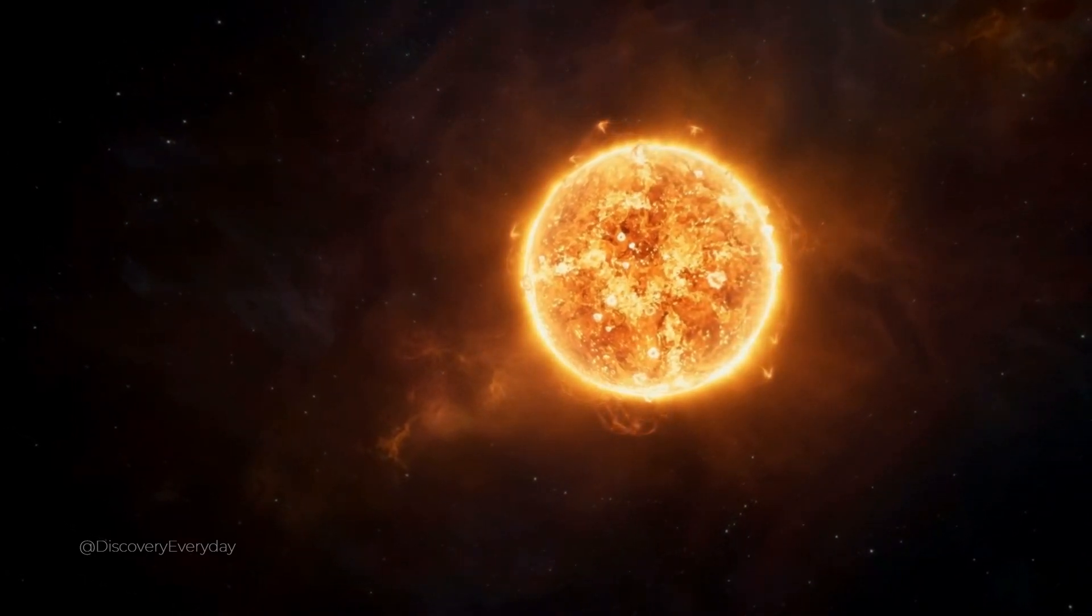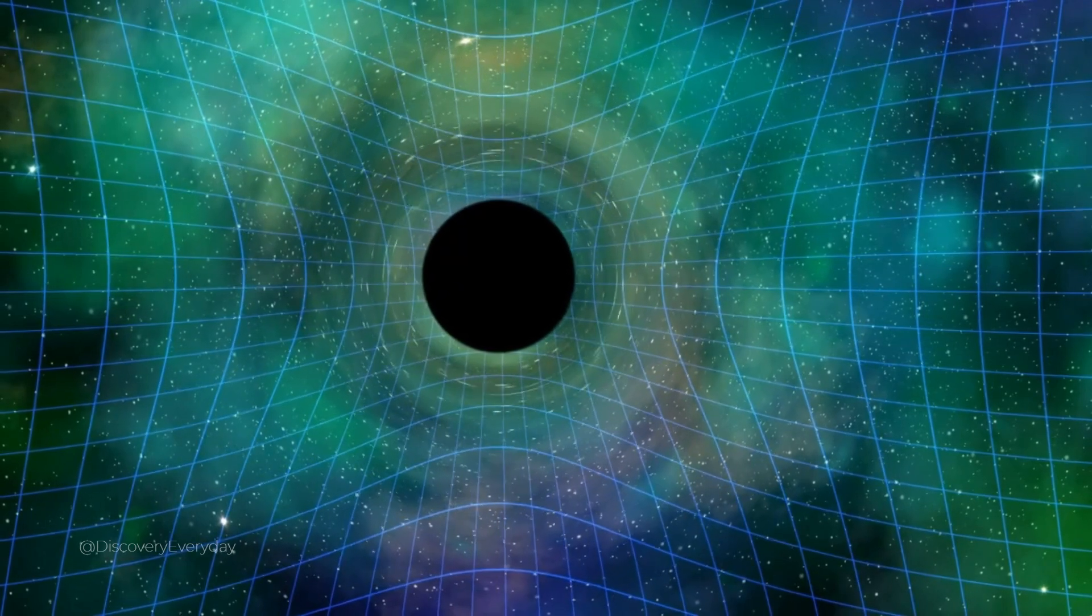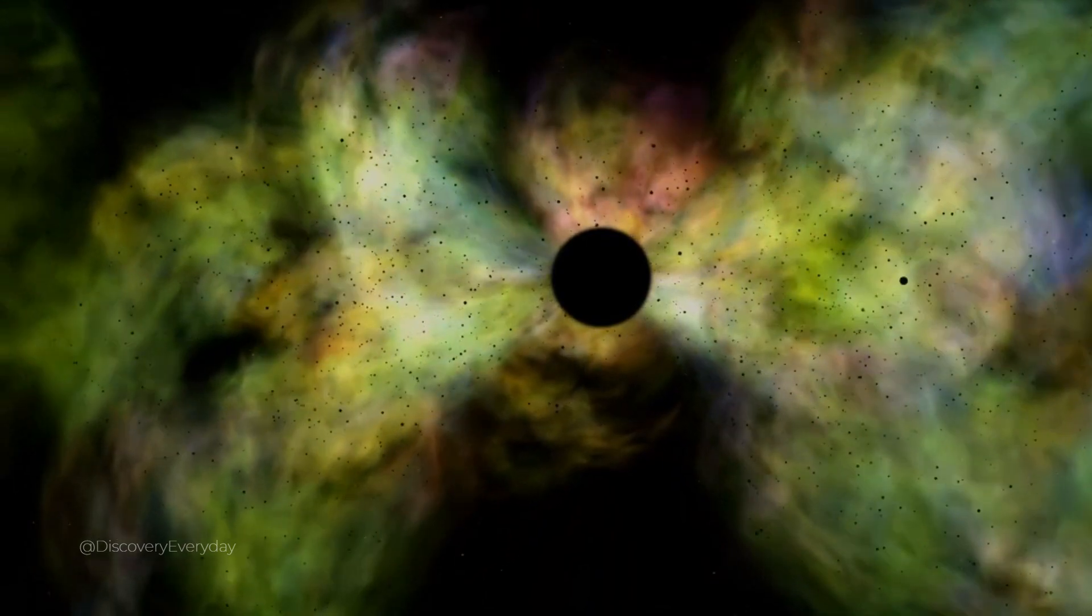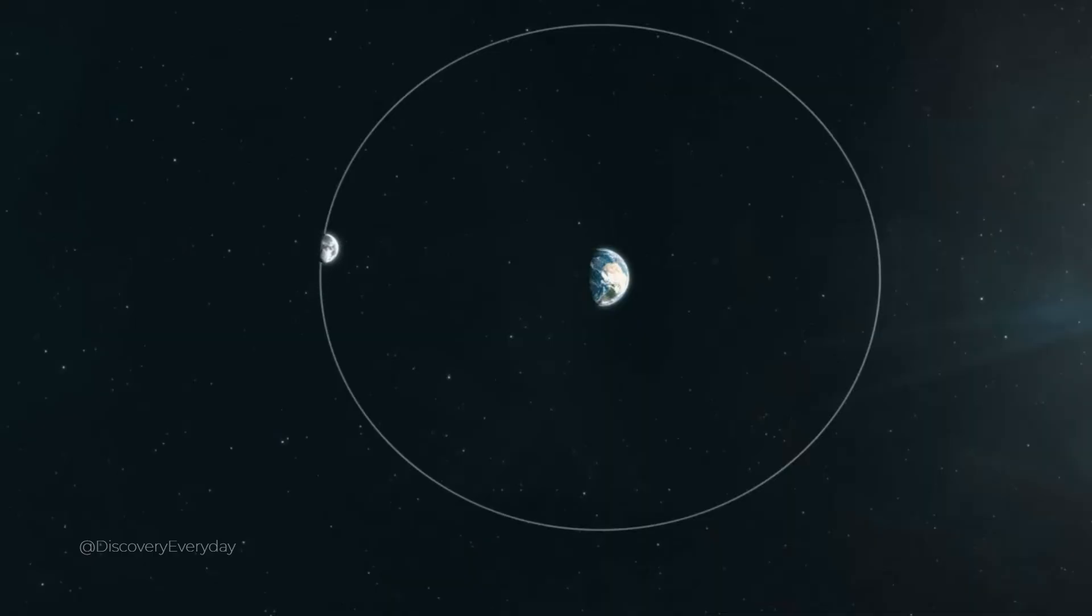They won't stay there forever, though. The moon is still a dynamic environment. It's actually being constantly bombarded with micrometeorites, which means that erosion is still happening on the moon, just very slowly.